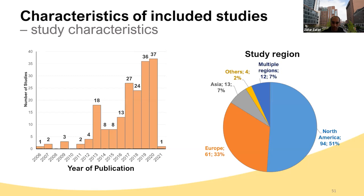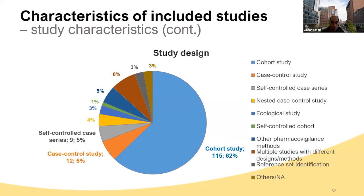The baseline characteristics of these studies show that most of them were published in most recent years, between 2017 and 2021, indicative of advancements of methods in this period. Almost 50% of the studies originated from North America, 33% in Europe and other regions. Cohort study was the most common study design, followed by case-control study and self-controlled case series.